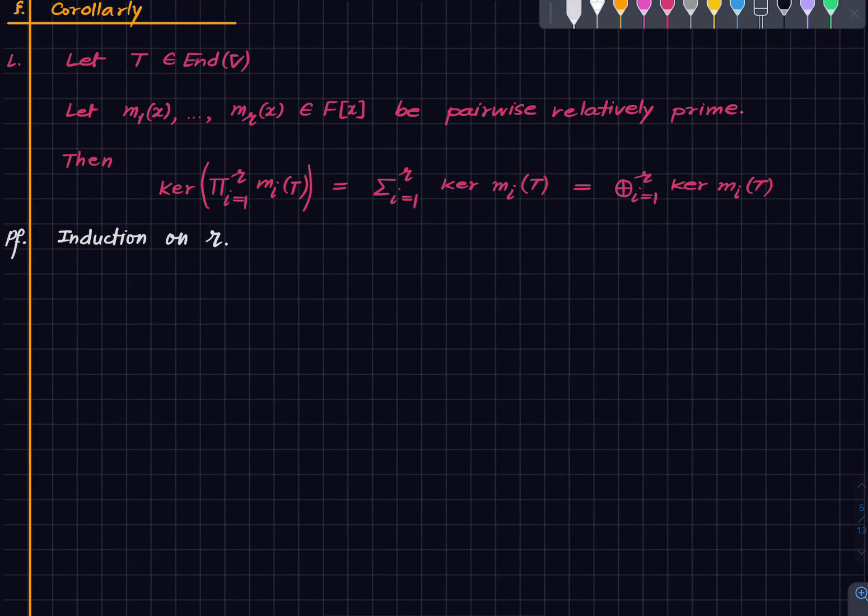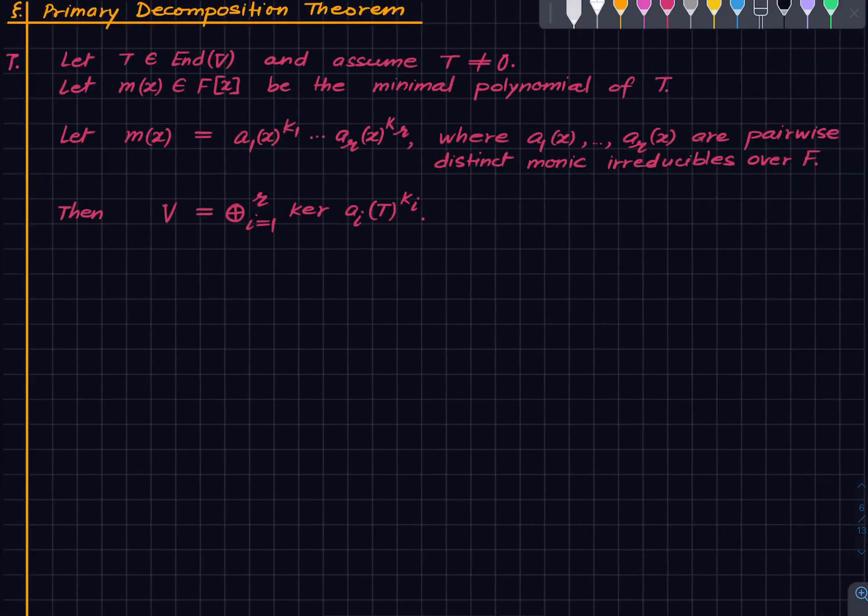And a consequence is primary decomposition theorem. So fix an endomorphism on a vector space V and assume the endomorphism is non-zero. Let m(x) be the minimal polynomial of the endomorphism. And suppose we have factorized the polynomial into monic irreducibles.